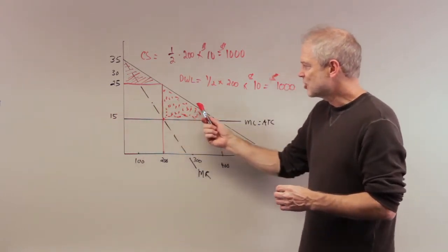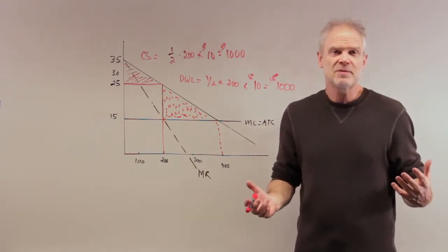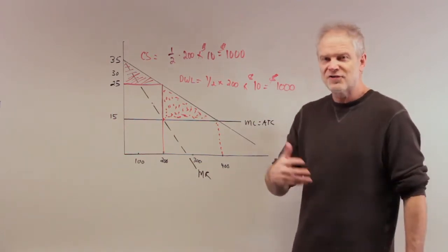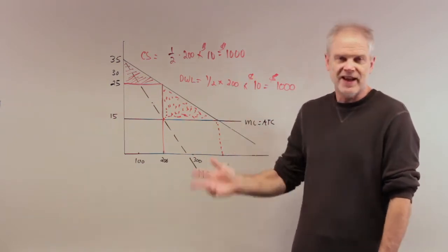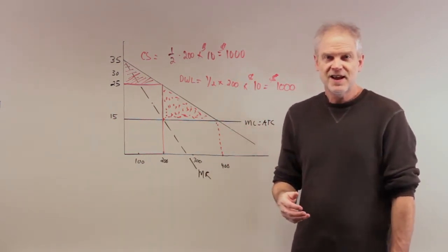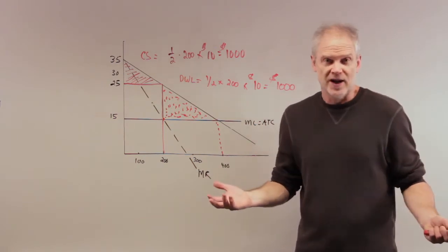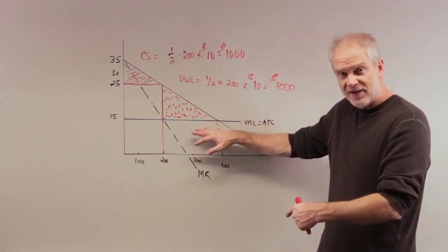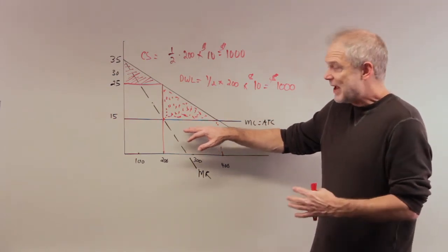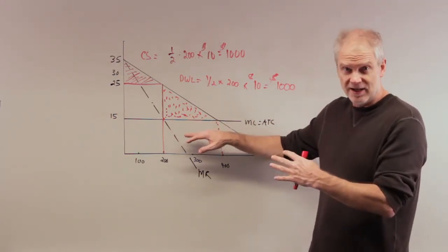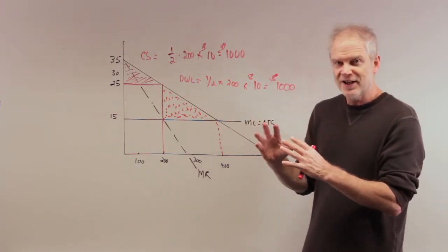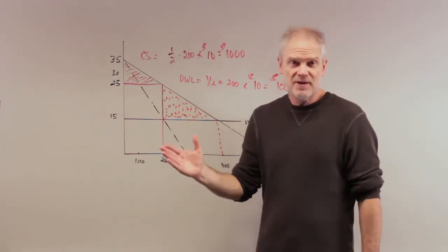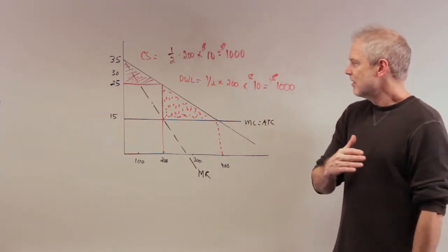Price discrimination can actually increase or decrease deadweight loss. Example: take the elderly at the movie theater. If I charge thirteen dollars a ticket, a lot of the elderly aren't going to go. The marginal cost of showing the movie in the afternoon is maybe zero. Why not try to get as many people in there as you can? You can get elderly to come in the afternoon, pay seven dollars. If you charge thirteen dollars, all those elderly who wouldn't buy it at thirteen dollars won't show up.